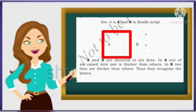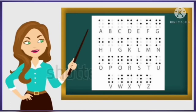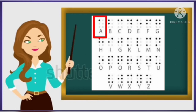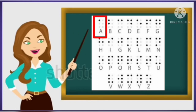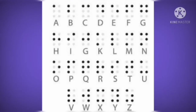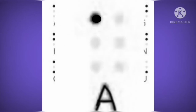Let us see how letter A looks in Braille script. Letter A has six dots, three dots each in a row. All these dots would be raised and the first dot in the first row would be thicker. So when a person touches and feels it, he can find six raised dots in two rows and the first dot is thicker, so it can be identified as A.